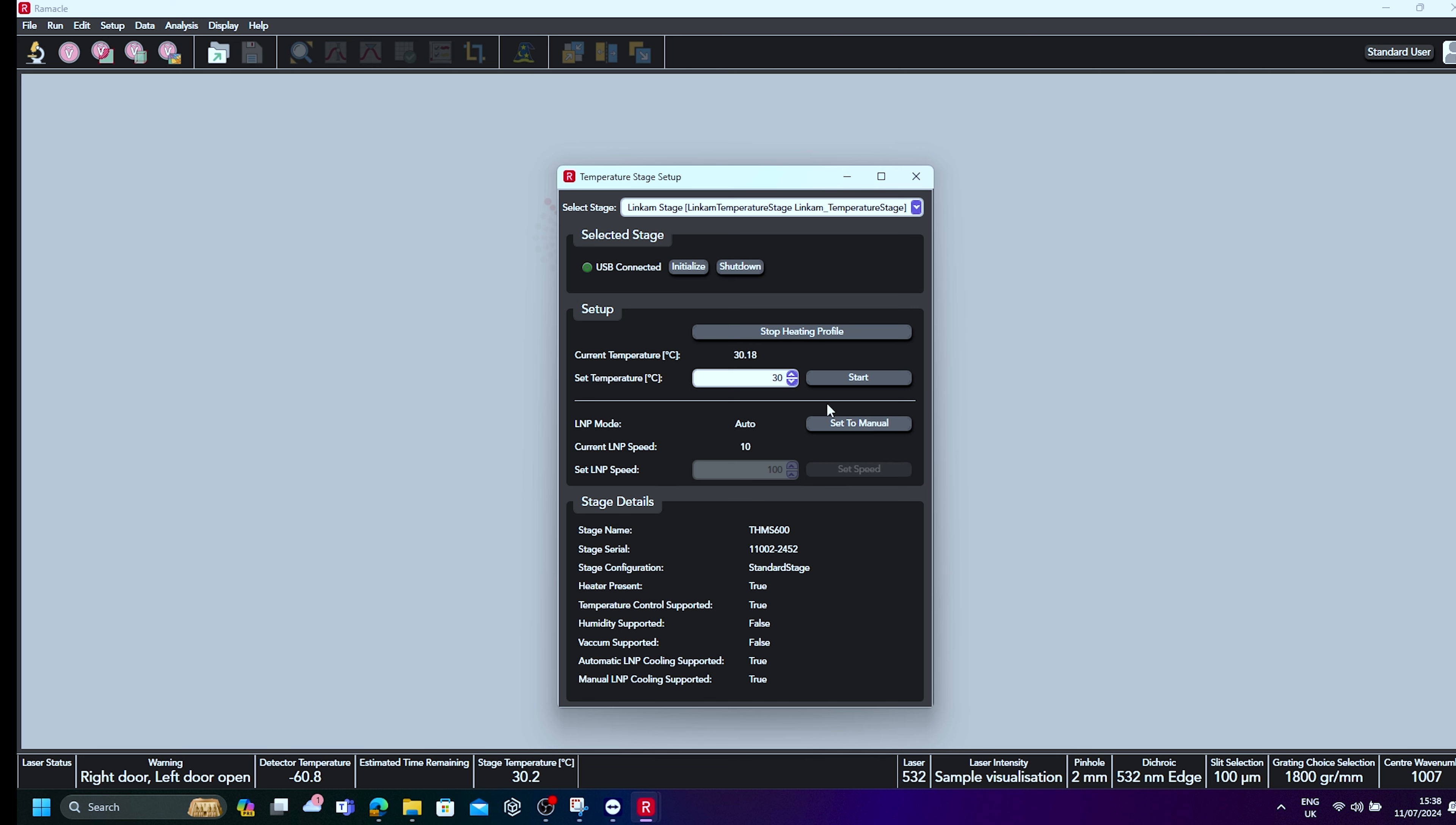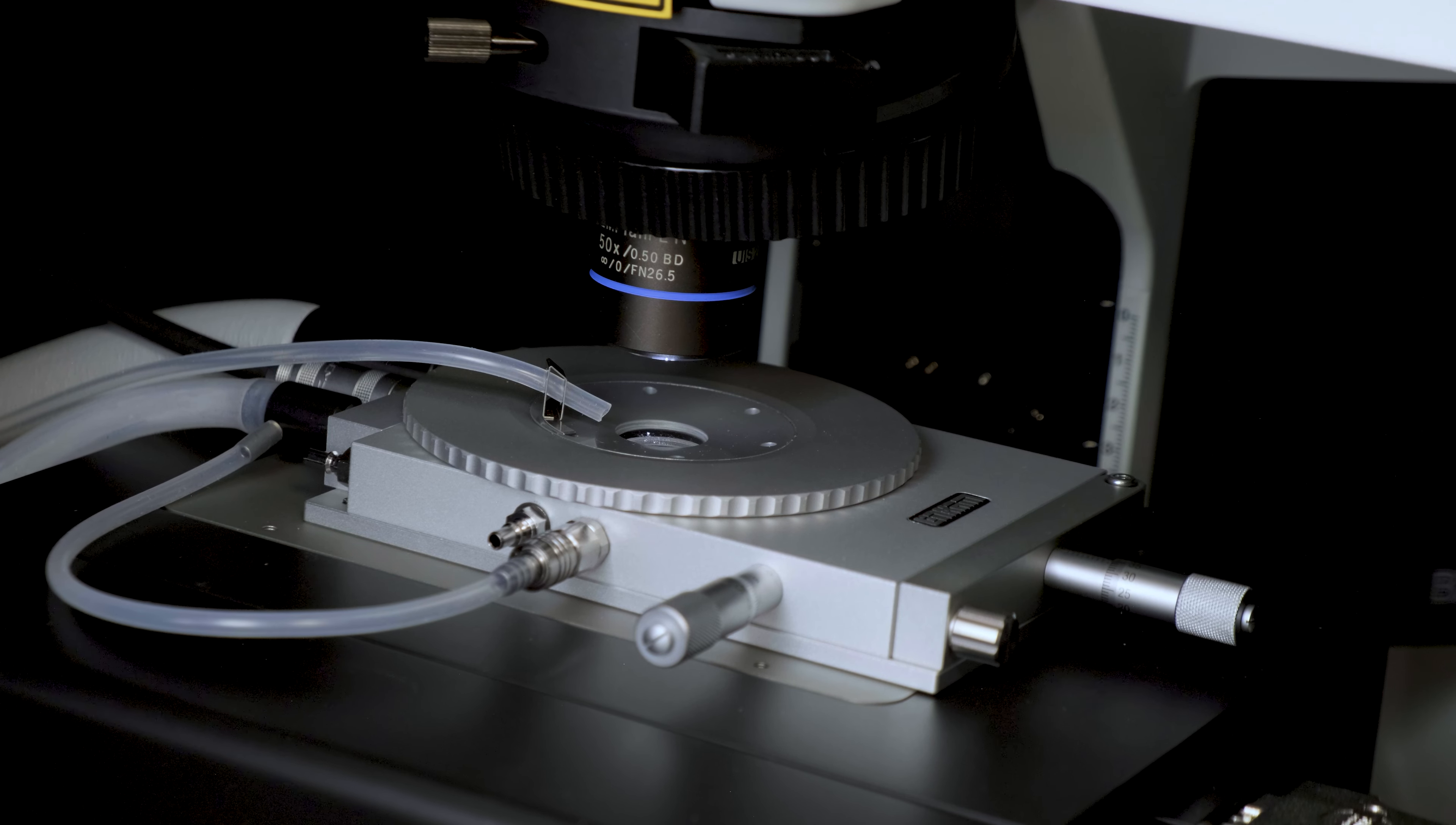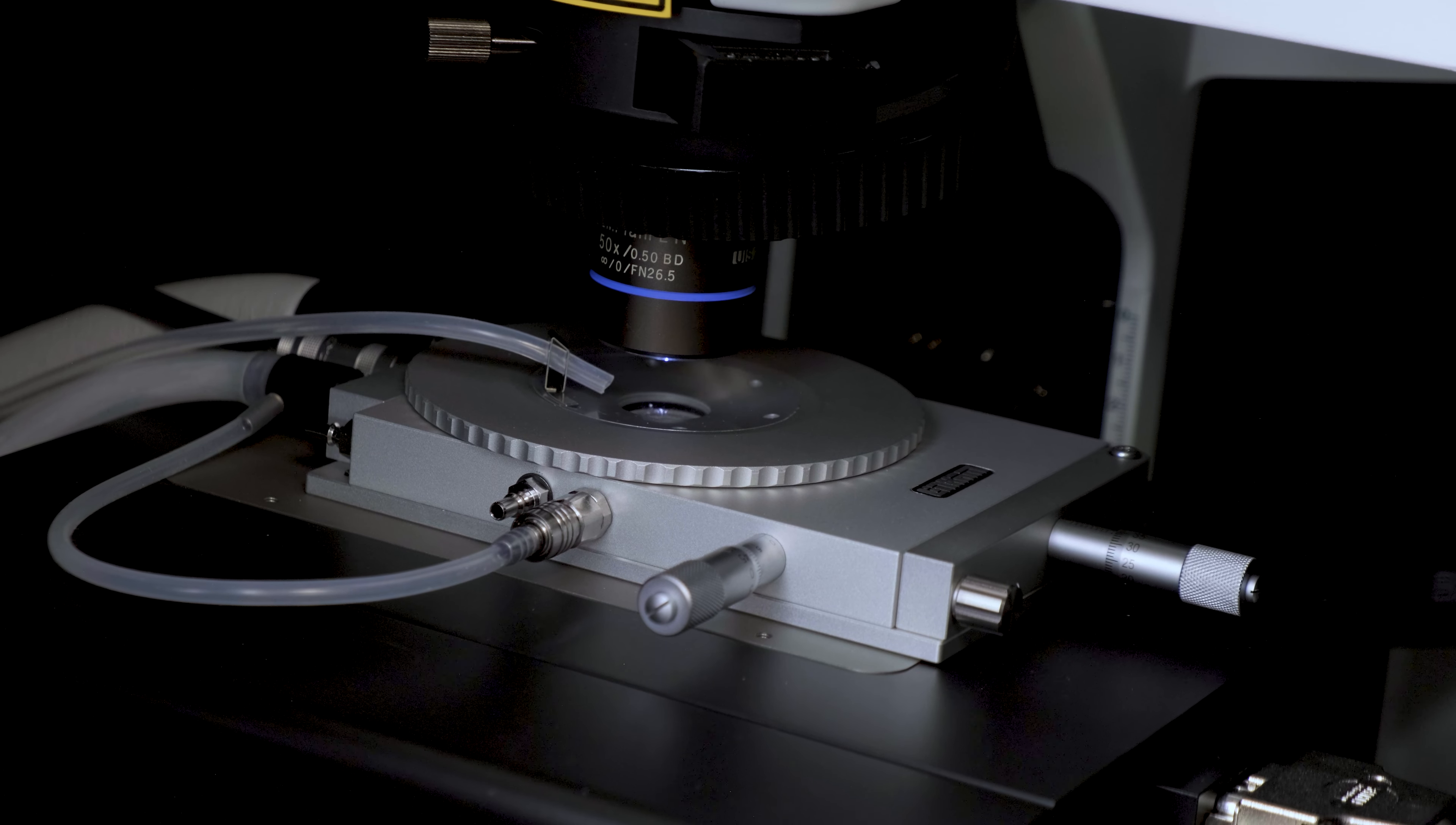The temperature can also be changed to the starting temperature for your measurement. Now, focus the sample under the microscope. A high magnification, long working distance objective is best to focus through the window of the temperature stage and detect strong Raman scattering intensity. Here we are using a long working distance 50 times objective with a numerical aperture of 0.5.